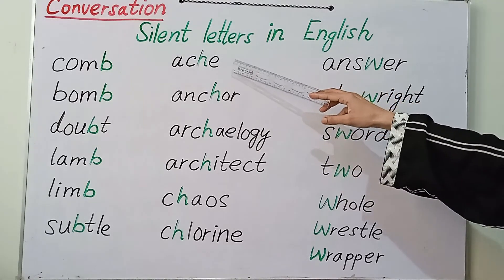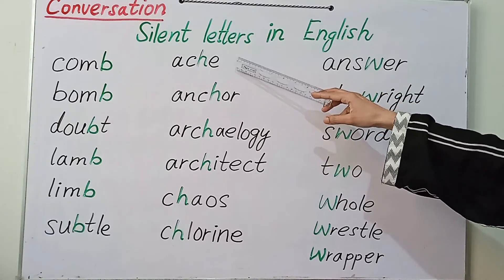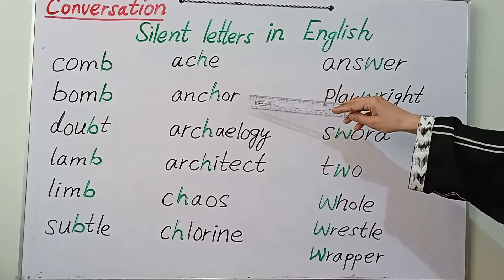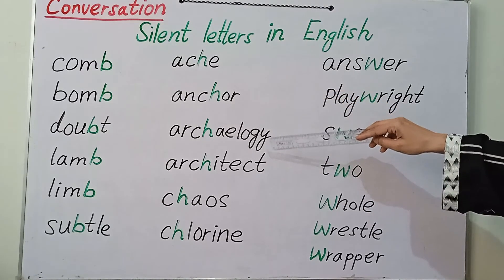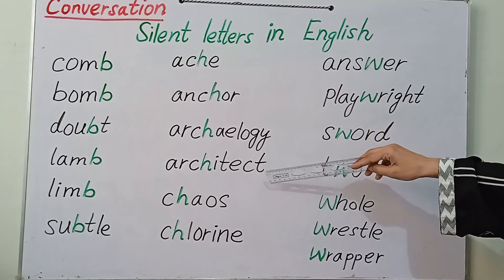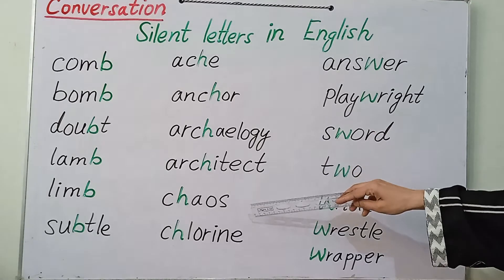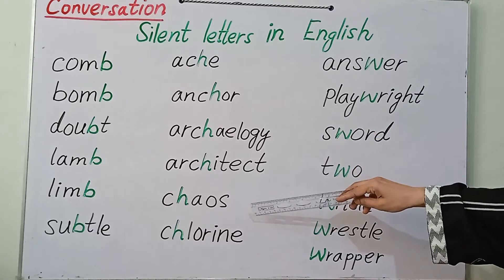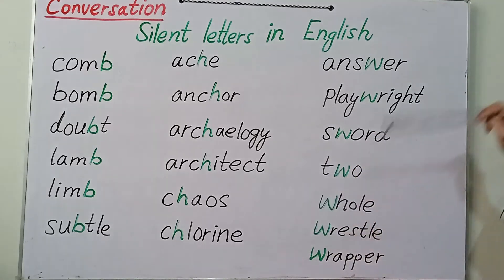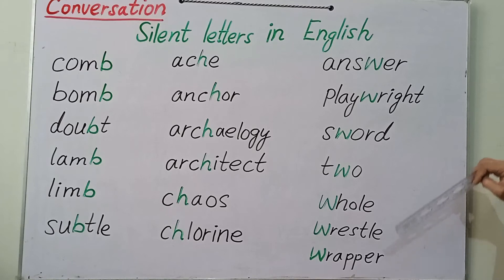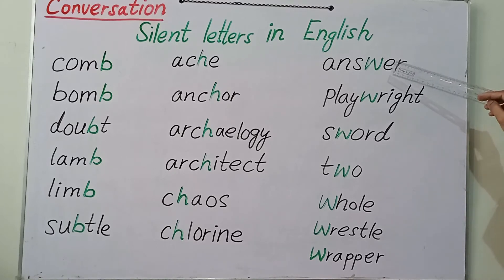Here are some words where the H sound is silent. The first word is echo, then anchor, archaeology, architect, chaos, and glory.